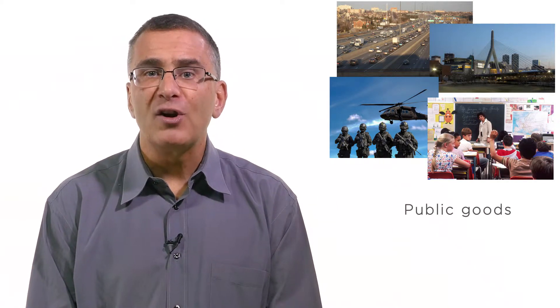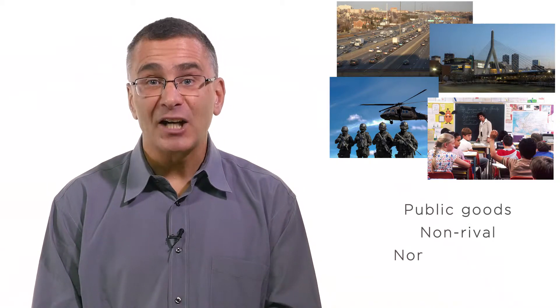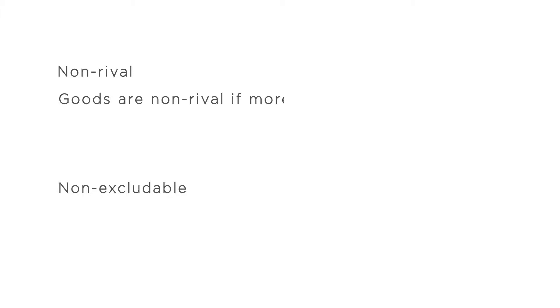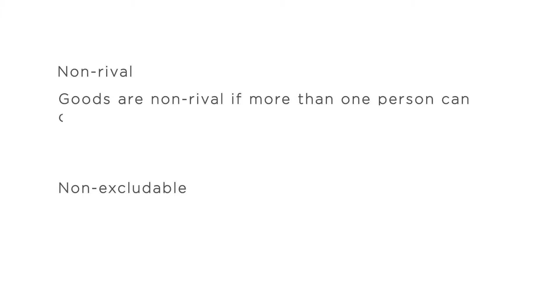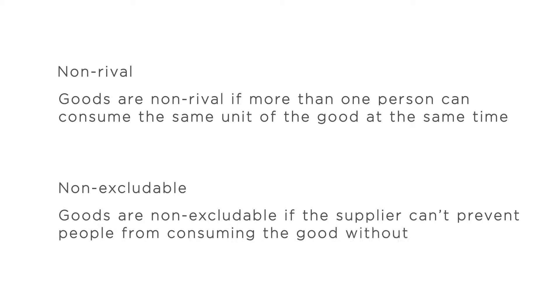Public goods are goods that are non-rival and non-excludable. Goods are non-rival if more than one person can consume the same unit of good at the same time — if I consume the good, you can consume it too. Goods are non-excludable if the supplier can't prevent people from consuming the good without paying for it.